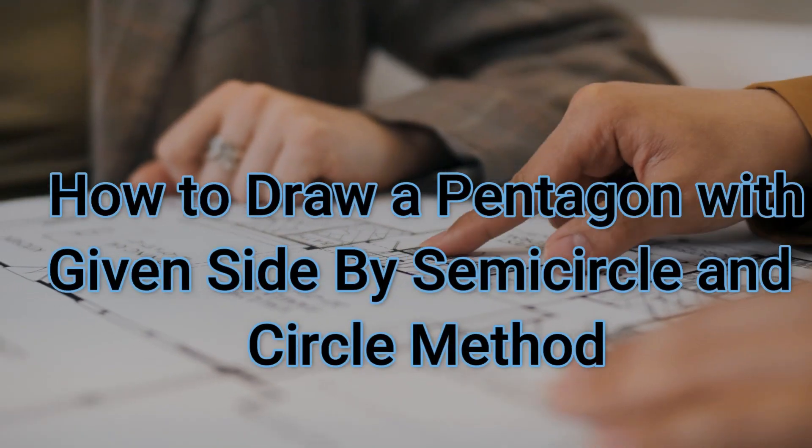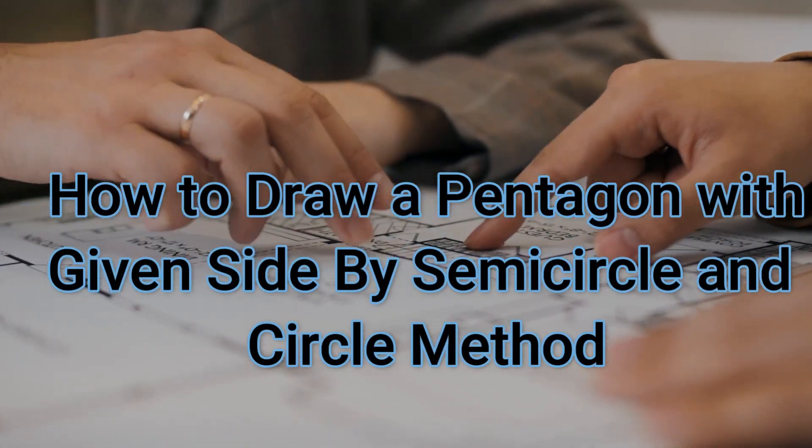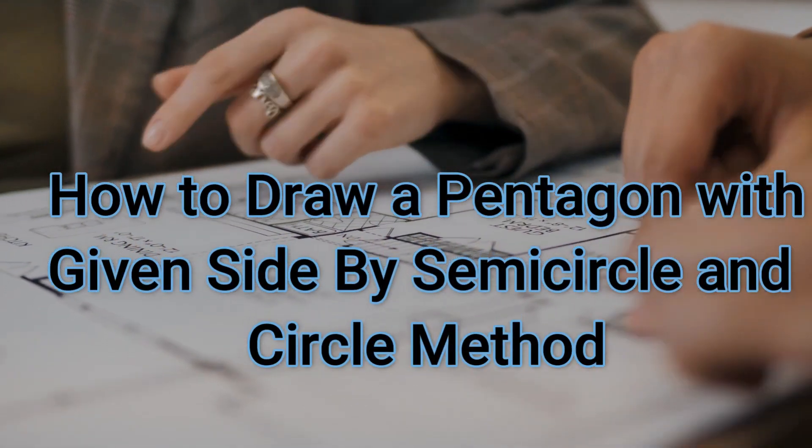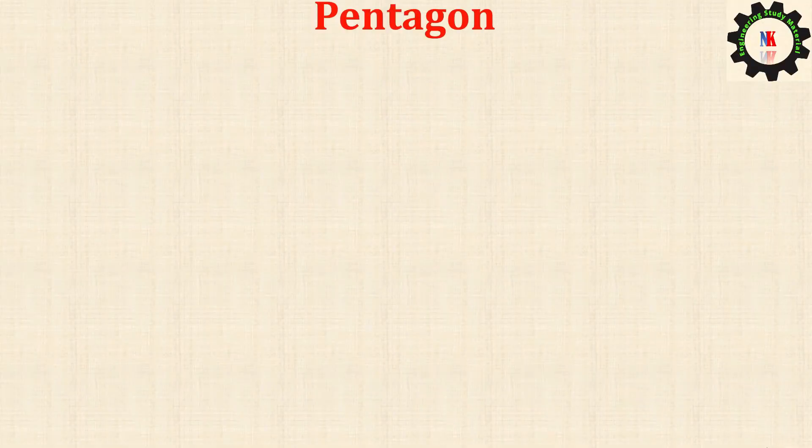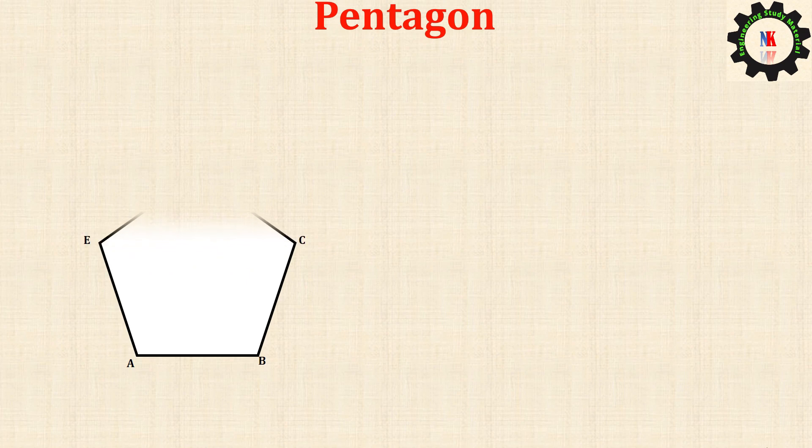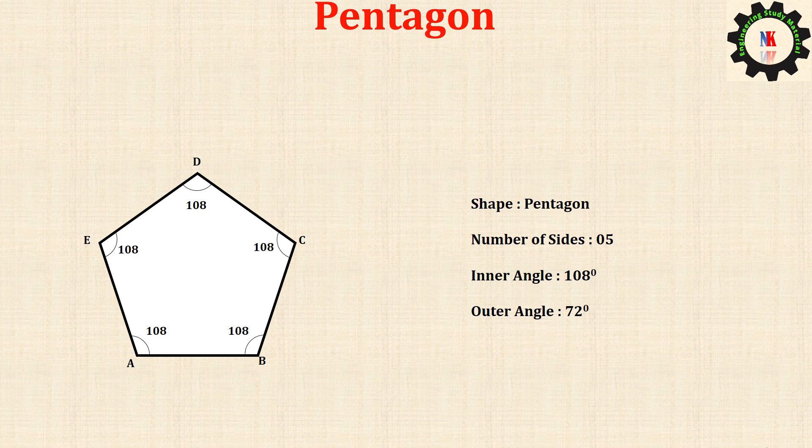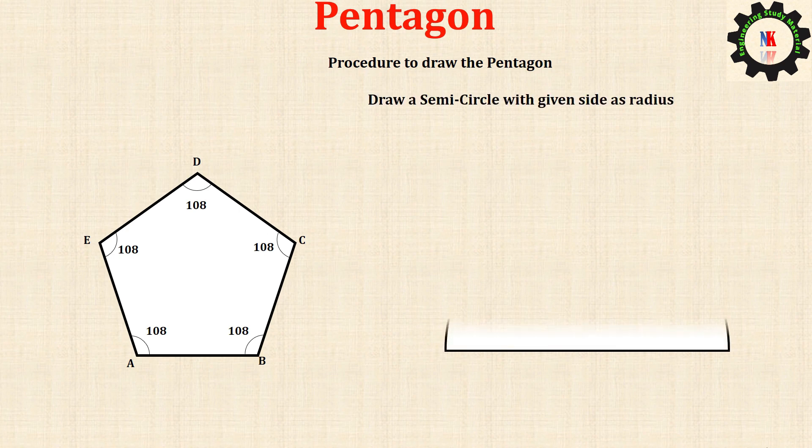How to draw a pentagon with a given side by semicircle and circle method. Shape: pentagon, number of sides: 5, inner angle: 108 degrees, outer angle: 72 degrees. Procedure to draw the pentagon: draw a semicircle with the given side as radius.